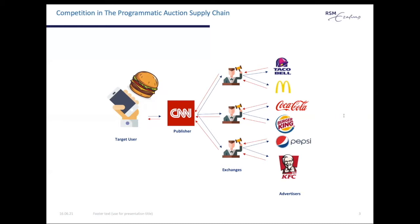The mechanism that regulates the allocation to different ad exchanges has radically changed in the past few years, going from the sequential waterfall to the parallel header bidding. Let's look at the difference.